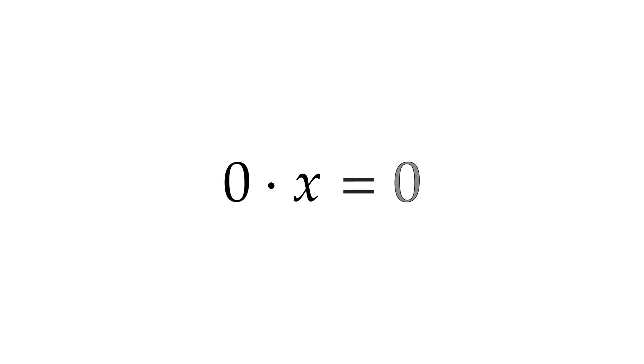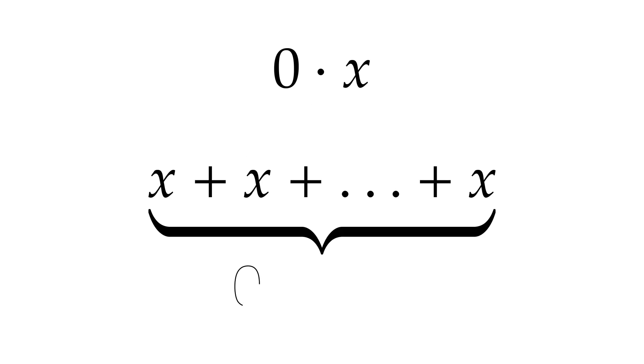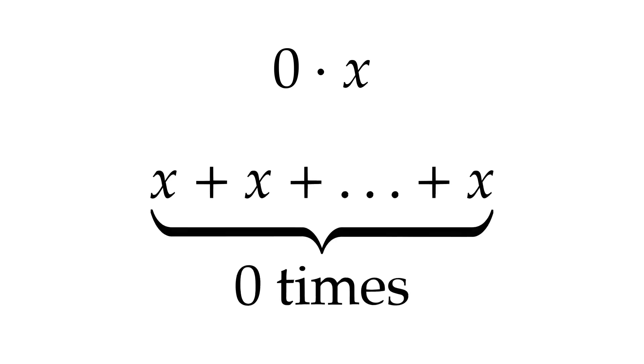Everyone knows that 0 times anything equals 0. But why? Your intuition is probably telling you that multiplication is repeated addition, and if I add 0 copies of something, then of course I have 0 things.